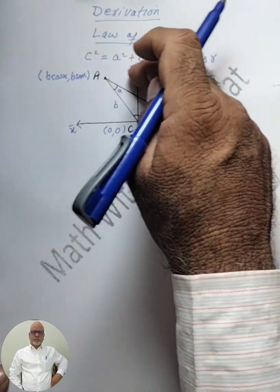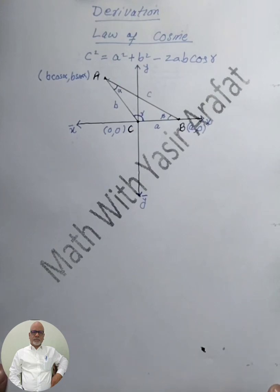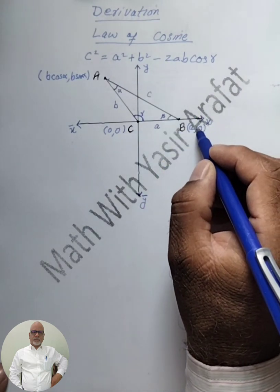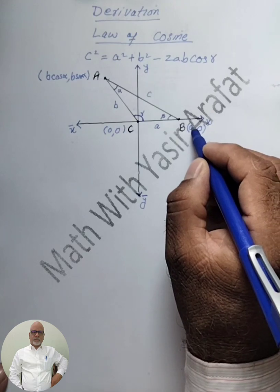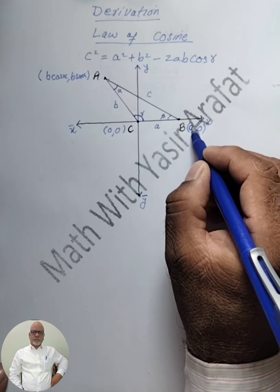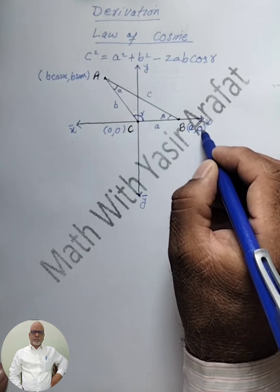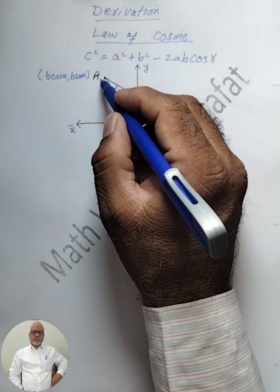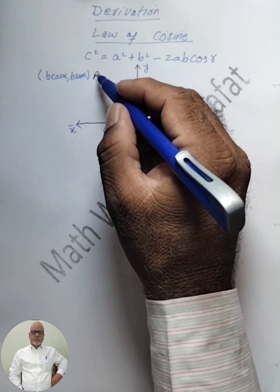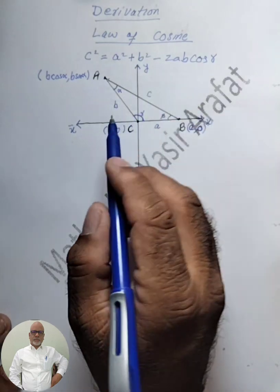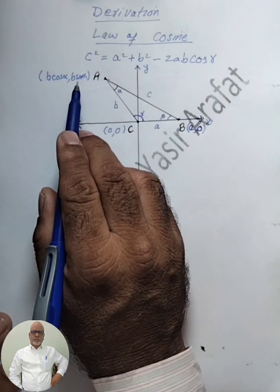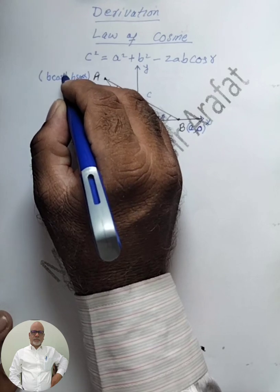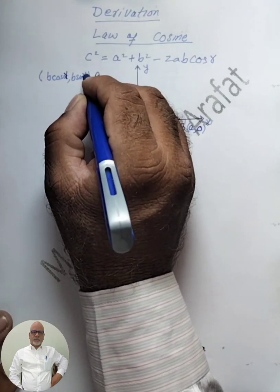So here, a, b, c are the sides of the triangle opposite vertices A, B, C. This point C is at the origin, so its coordinates are (0, 0). And point B is on the x-axis, so its coordinates are (a, 0) because the y-component is 0 on the x-axis. For point A, we need to find b cos gamma and b sin gamma.